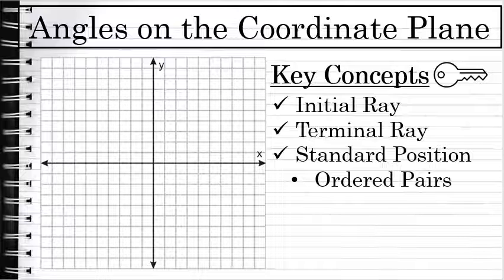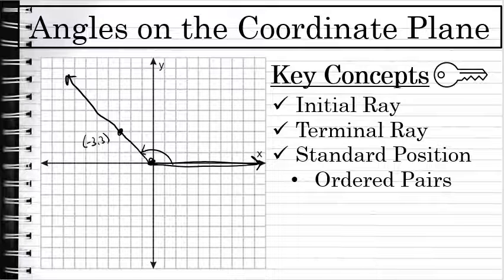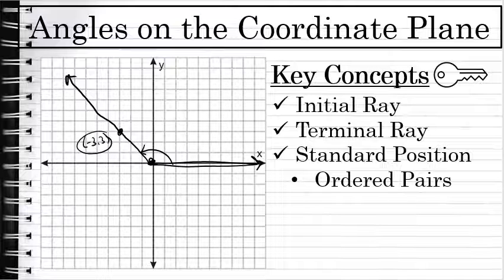If I say draw the angle in standard position whose terminal ray passes through (-3, 3) — here's the point (-3, 3). If the angle is in standard position, that means it starts on the x-axis, the initial ray is the x-axis, and the terminal ray passes through (-3, 3). So that is this angle — it's an obtuse angle. It measures maybe 100 degrees; you could actually use trigonometry to find its exact measure using a point on the terminal side of the angle. So when an angle is in standard position, an ordered pair is enough information to define that angle.